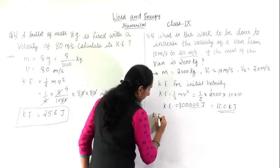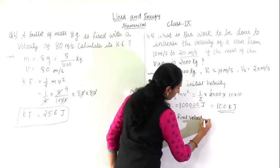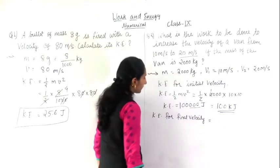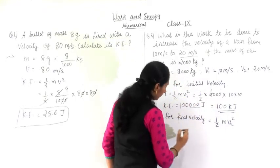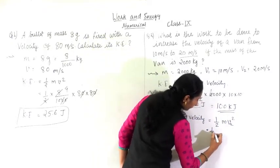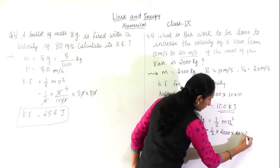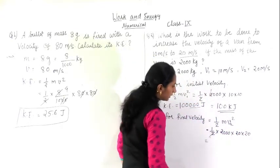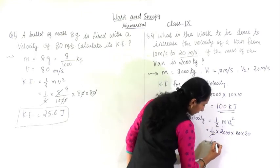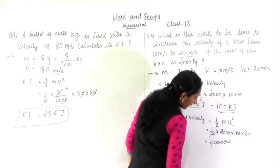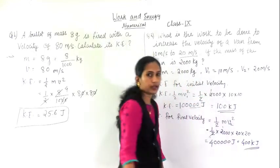Now similarly, I will calculate kinetic energy for the final velocity V2. KE equals half mv square: half, mass is 2000, and V2 is 20 into 20. The 2s get cancelled again, giving 1 into 2000 into 400 — that is 4 lakh joule. You can convert this into 400 kilo joule. So this is the answer for the final kinetic energy.